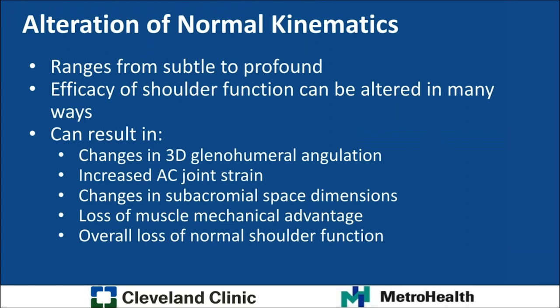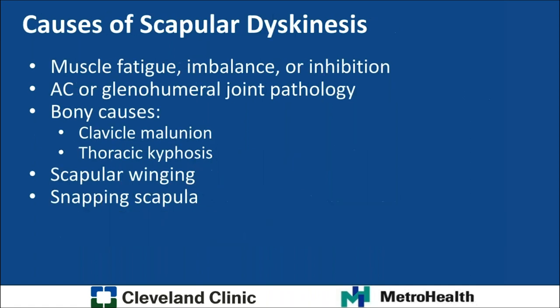Any alteration of normal scapulothoracic kinematics can have a significant effect on shoulder function, ranging from subtle to profound. Changes in muscle balance can result in changes in the 3D position of the glenohumeral joint, increased AC joint strain, changes in subacromial space dimensions leading to impingement, and reduced mechanical advantage of the shoulder girdle muscles — all contributing to overall loss of normal shoulder function.